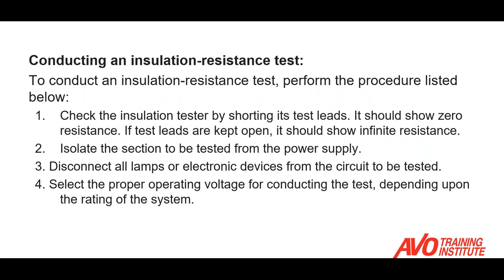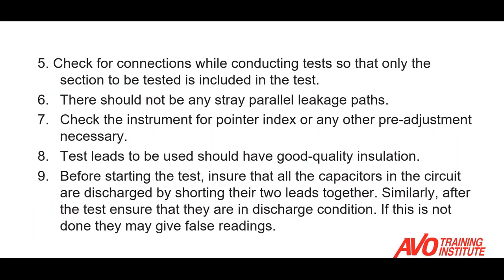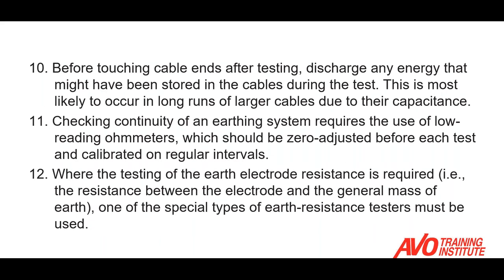To perform an insulation resistance test, first check the integrity of the leads by shorting the test leads — this should give zero resistance — and with leads kept open you should see infinite resistance. Isolate the section being tested from the power supply and ensure it's de-energized. Select the proper operating voltage on the insulation resistance tester depending on the rating of the system. Only the section to be tested is included in the test, and ensure that all capacitors in the circuit are discharged before starting. After the test, discharge any energy stored in the cables before touching the ends.